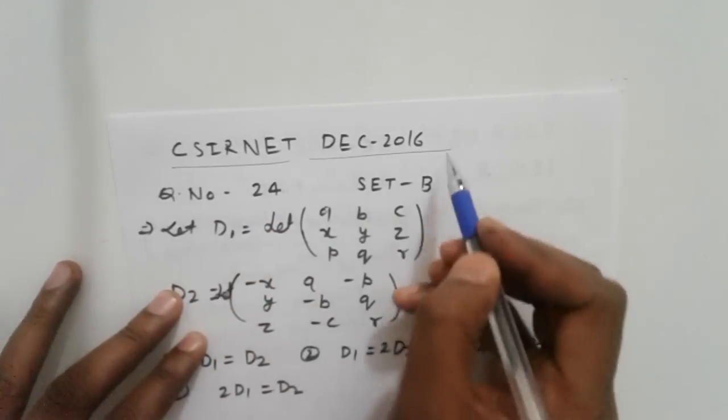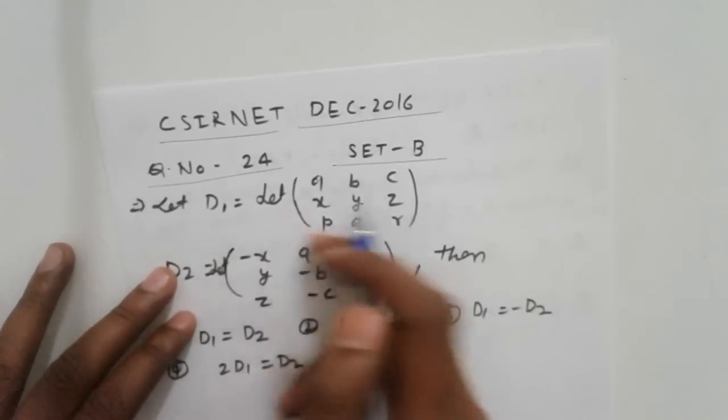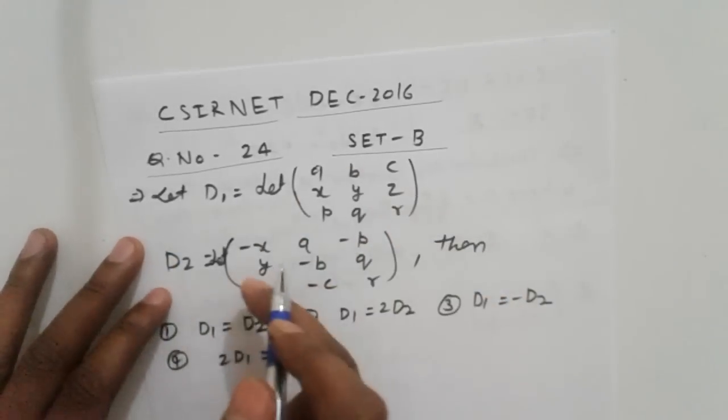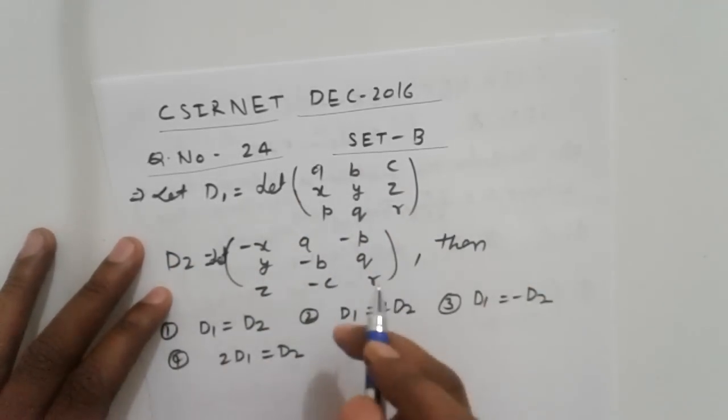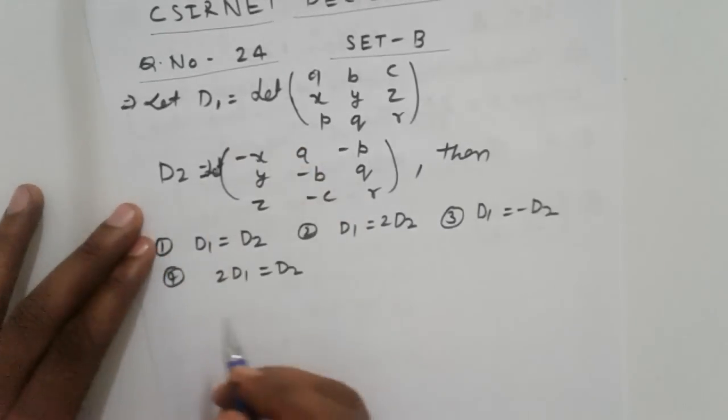This is CSIR NET December 2016, question number 24, set B. Given D1 equals the determinant of A, and D2 equals the determinant of another given matrix, what is the relation between them? First, we find out D1.